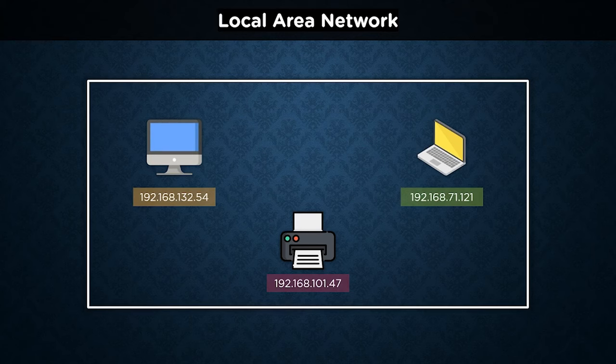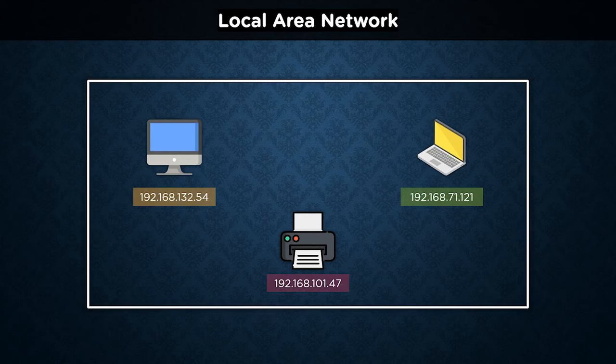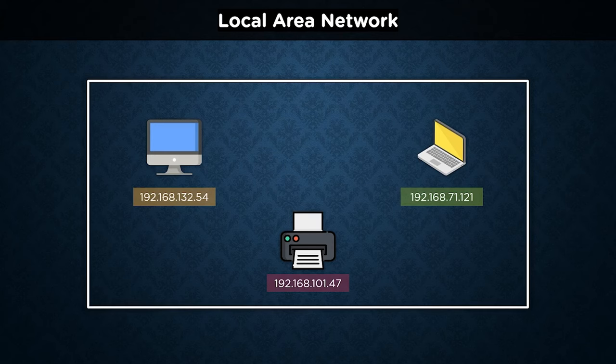It's the digital equivalent of your home or workplace's mailing address. The addresses are divided into four sections separated by dots. Each numeral portion represents an 8-bit binary integer which can range from 0 to 255. Computers work with binary numbers, and each number in an IPv4 address represents an 8-bit binary integer, which is why none of them can exceed 255. As seen in the picture, we can now identify each device individually by their designated IP addresses.